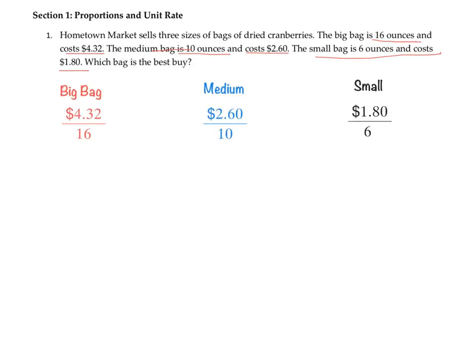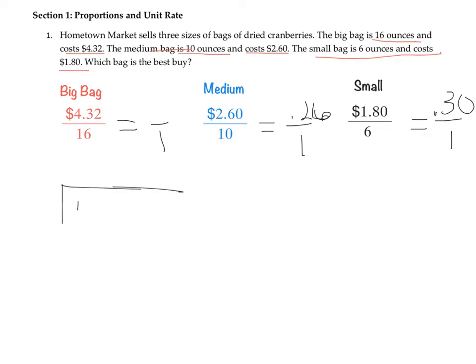I have now written down each of the rates for each bag and labeled them. We need to find the unit rate — how much would it be for one ounce. So $1.80 divided by 6 is $0.30. And $2.60 divided by 10 is $0.26. And then I have $4.32 divided by 16, which you might not know off the top of your head, so let's work it out.